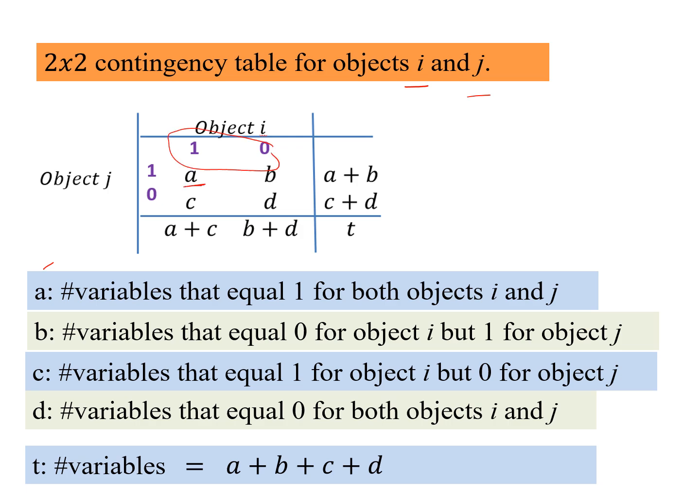So a is the number of variables that equal 1 for both objects i and j. B, this quantity b is the number of variables that equals 0 for object i but 1 for object j.